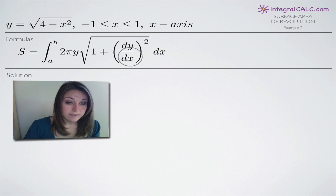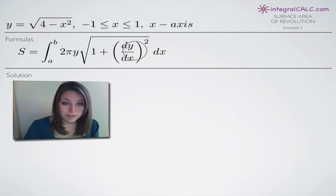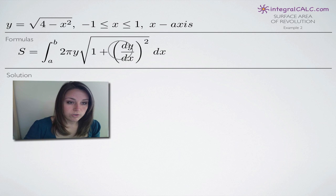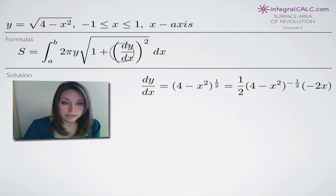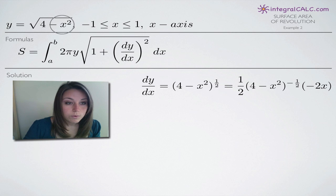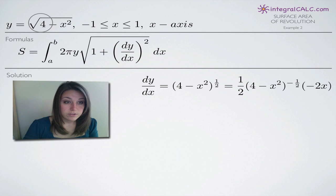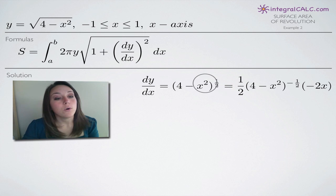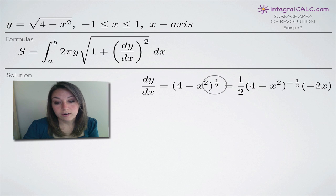We're going to start with what's inside the square root because this is the most complicated part of our formula. We'll calculate the derivative dy/dx, then square it, add one, and once we have that piece together, we'll plug it into our integral. Let's go ahead and find the derivative first. When we find the derivative of the square root of four minus x squared, the first thing we'll do is convert the square root to an exponent of one-half. The square root of something is the same as that thing to the one-half power, so we convert it to four minus x squared to the one-half.